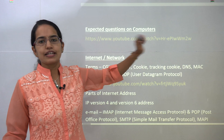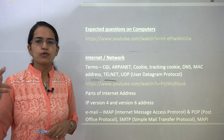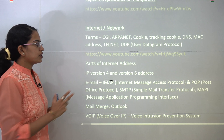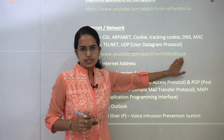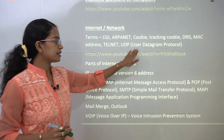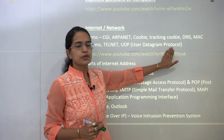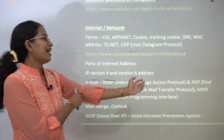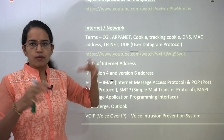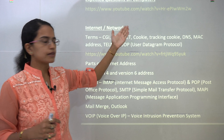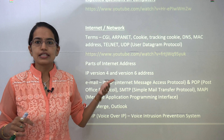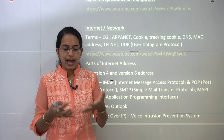Last January there were a series of questions on computers, and those expected topics are again important. Under internet and networking, major terms have been explained. Additionally, UDP — User Datagram Protocol — is a low-latency alternative to TCP. CGI, the Common Gateway Interface, is the common gateway through which all information passes. ARPANET was the prior computer network. Cookie and tracking cookie are also important: the server tracks the client's information through tracking cookies.